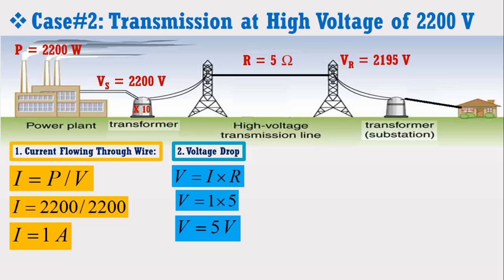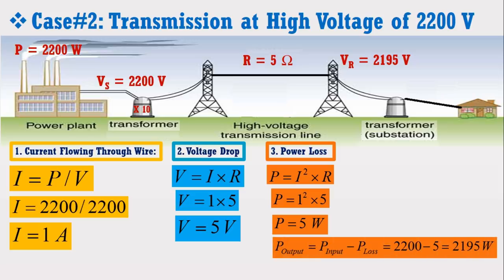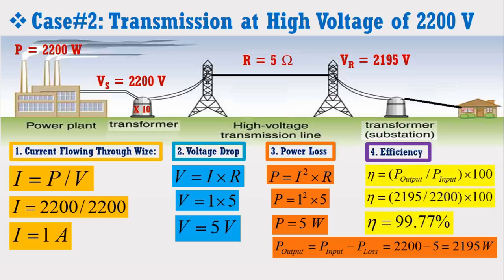Now again by putting the value of current in the power loss formula, it is observed that at this high voltage, the transmission line has a power loss of only 5 watt. It means that out of 2200 watt, 2195 watt of power will be reached at the receiving station. Now by putting this output power in the efficiency formula, we observe that the efficiency of the transmission system at high voltage of 2200 volt is 99.77%. It means that at high voltage, efficiency of the transmission system is enhanced.